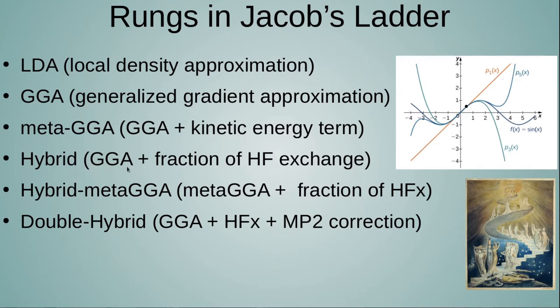You can mix a certain amount of GGA exchange with a fraction of Hartree-Fock exchange — which is the exact form to consider exchange between electrons — to get hybrid functionals, which are usually better performing but more expensive than GGA. Combining meta-GGA with Hartree-Fock exchange gives hybrid meta-GGA functionals. Double hybrids are GGAs that contain Hartree-Fock exchange and an MP2 correction, which is a perturbation theory correction to Hartree-Fock that improves energetics considerably.